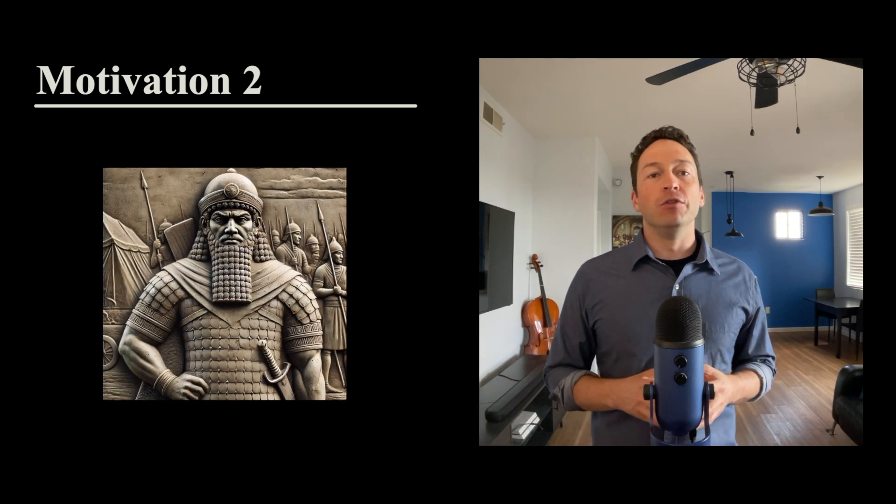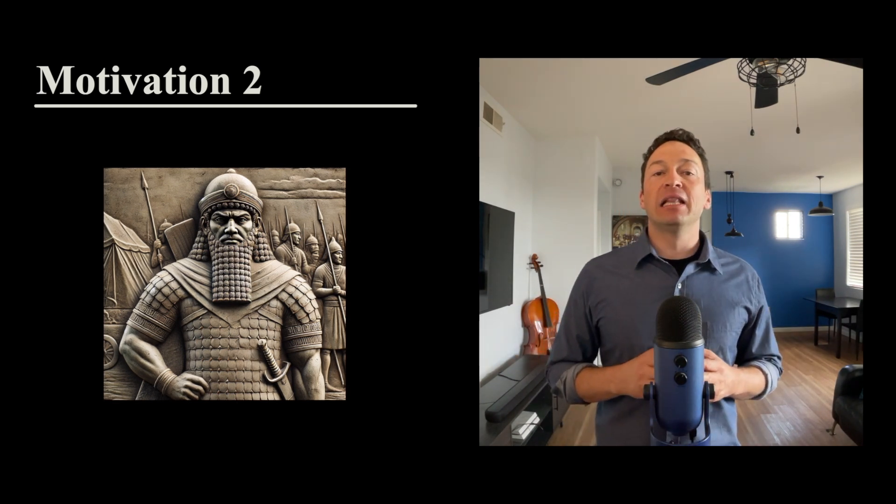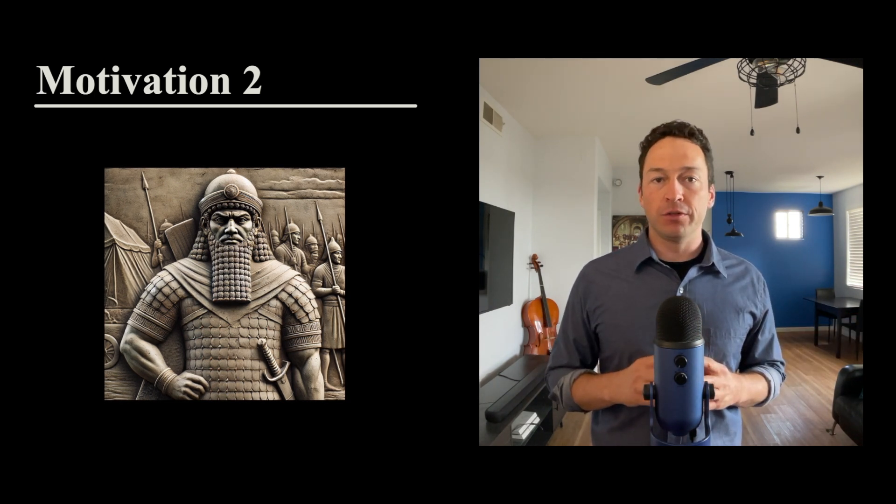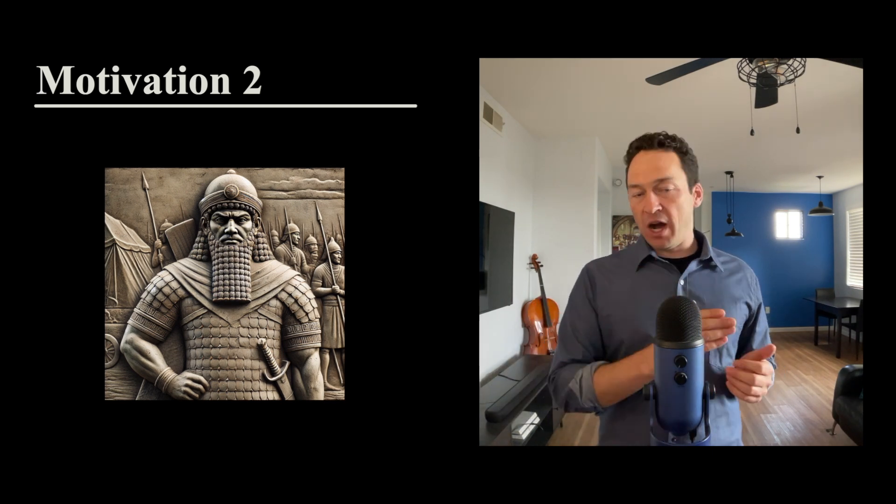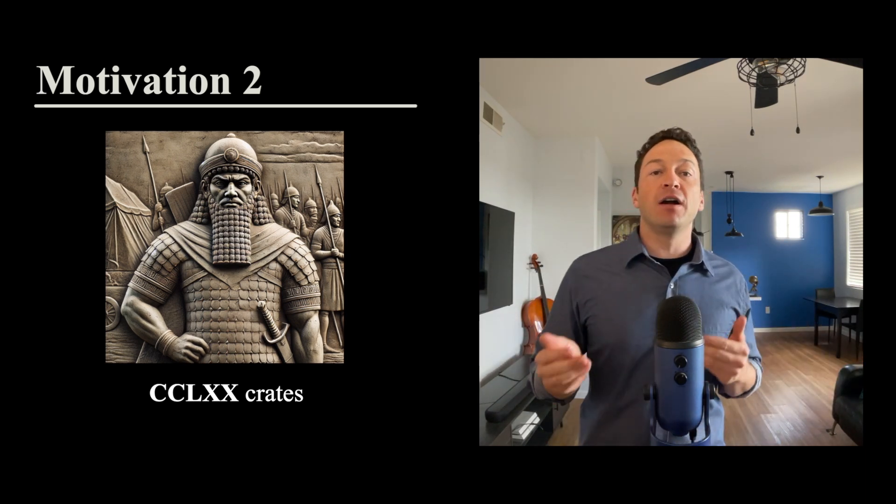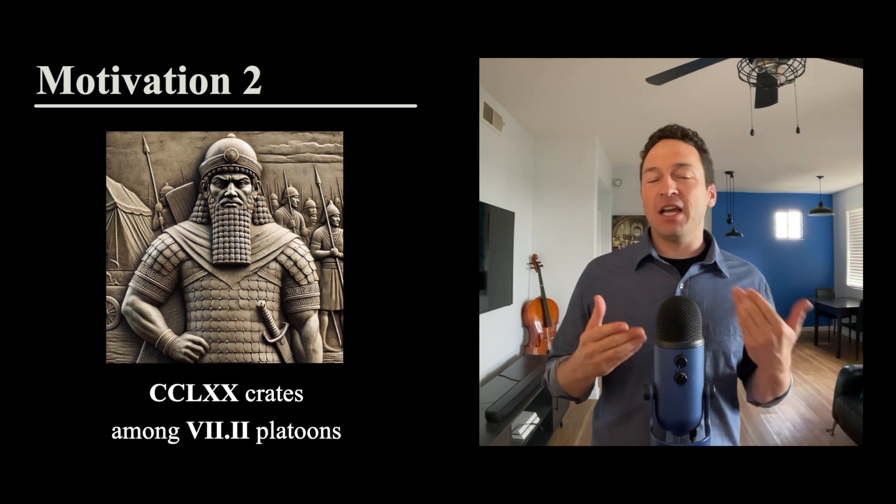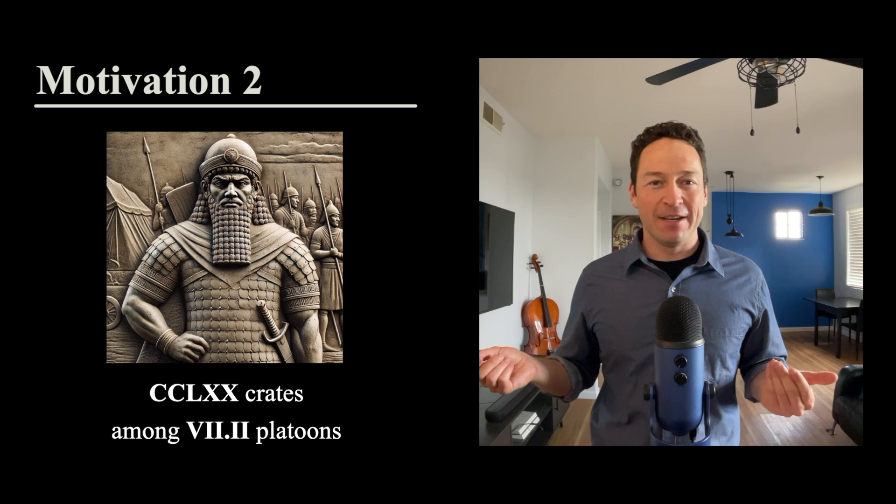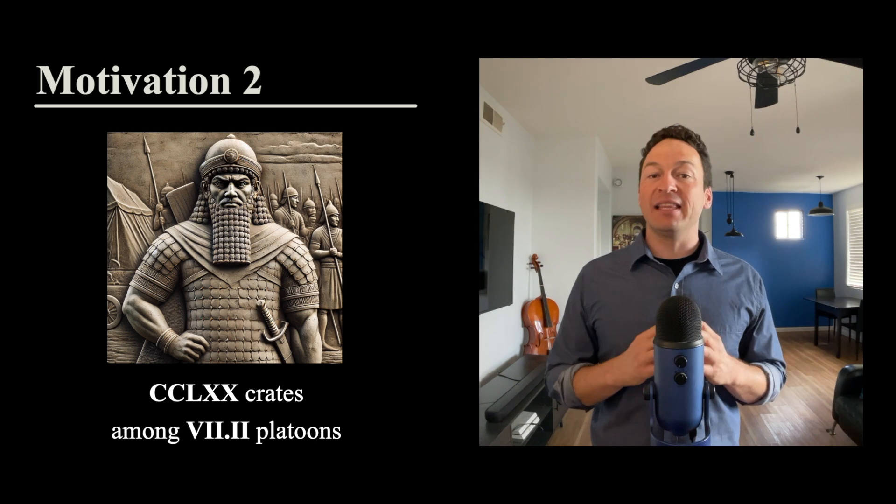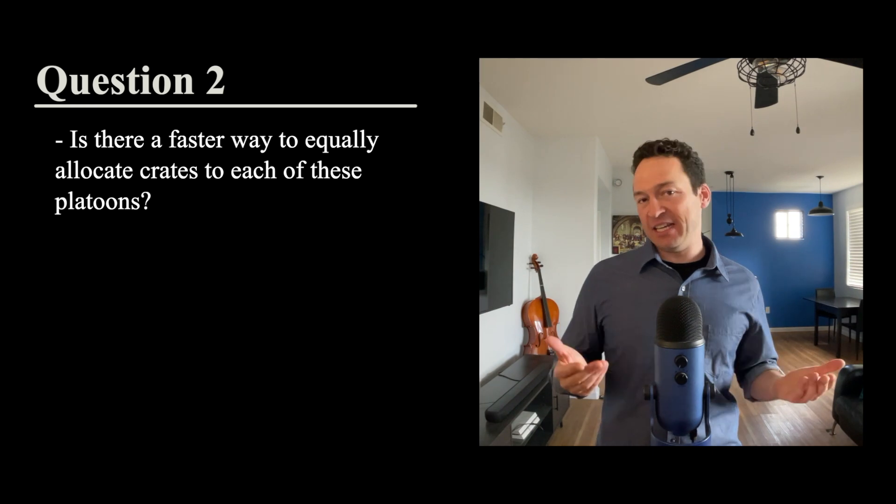When he reaches the army, the general explains to Rom that he has five and four platoons under his command and that he would like Rom to distribute all of the goods he has just brought equally among all of these platoons. Rom knows that he has 250 and 210 crates. Somehow he has to figure out how to distribute those crates among five and four platoons. He thinks, well, maybe I could just distribute it like I distributed the candy among my children all those years ago. But he realized that's going to take some time. So that leads him to the following question: Is there a faster way to allocate crates to each of these platoons?